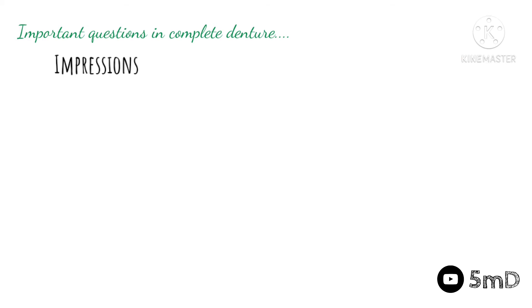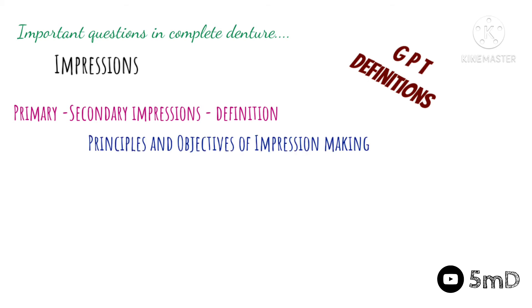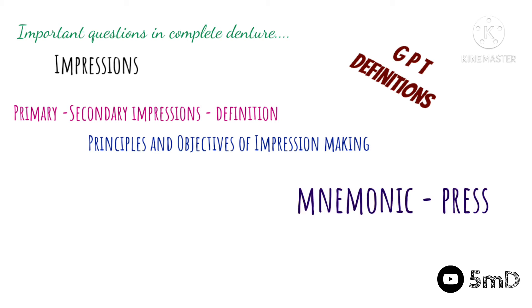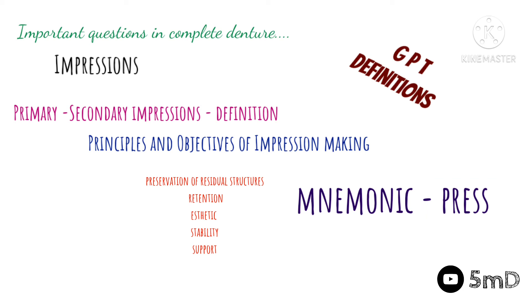The next important topic deals with impressions. We need to know the GPT (Glossary of Prosthodontic Terms) definition of impression, what is a primary impression, and what is a secondary impression. The principles and objectives of impression making are really important — there are five objectives, and you can use the mnemonic PRESS to remember them: P for preservation of residual structures, R for retention, E for aesthetics, S for stability, and S for support. Retention, stability, and support each have the capacity to be asked as a separate five-mark question.